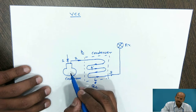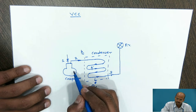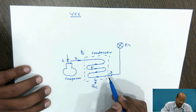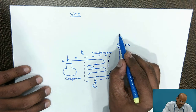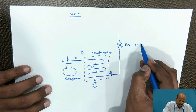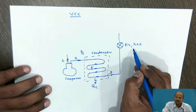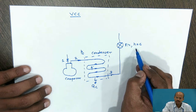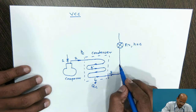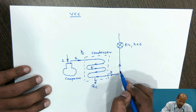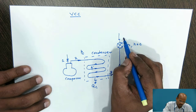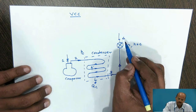The compression process is an isentropic compression process and the condensation process is an isobaric condensation process. In the expansion valve, the type of process that takes place is throttling, meaning the enthalpy during the expansion process remains the same. Therefore the saturated liquid undergoes the throttling process and at the outlet of the expansion valve we get low pressure wet refrigerant.